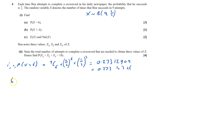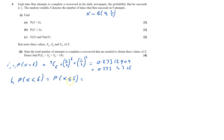Part B: probability that X is less than six. I could do this by working out probabilities for zero, one, two, three, four, five, but it doesn't take too long. So I'm going to use the cumulative tables — this becomes less than or equal to five. Looking at the tables for n equals nine, probability two-thirds, that gives me 0.3497, from tables.